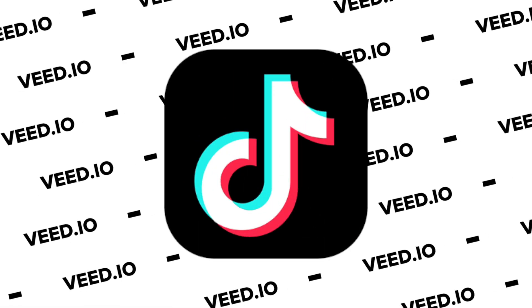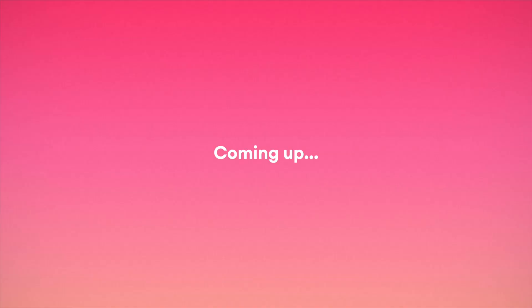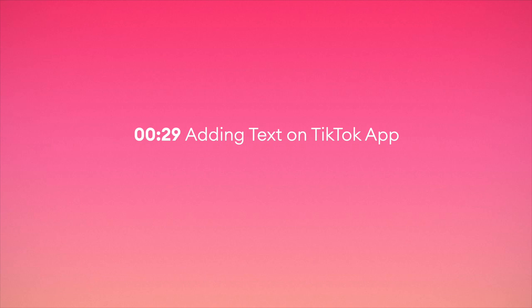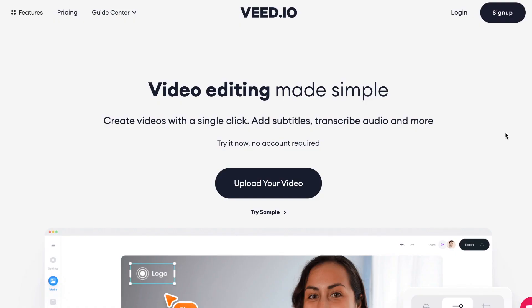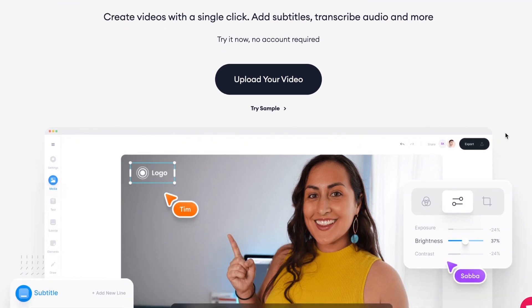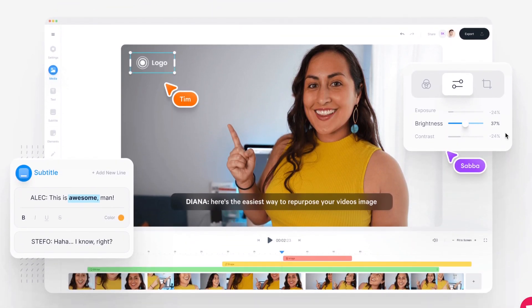In this video I'm going to show you how to add some text to your TikToks using two simple methods. First I'm going to show you how to add text using TikTok's built-in editor and then I'm going to show you another way to add text using Veed. Veed is an easy to use online video editing software based entirely within your internet browser and it makes adding text, images and subtitles much more customizable than within the TikTok app, which is really going to give you some creative freedom to help you stand out.